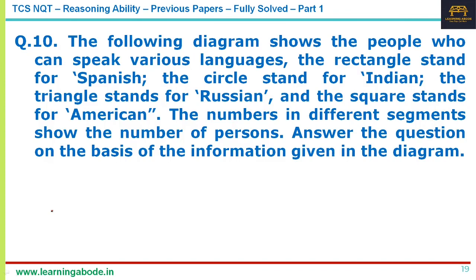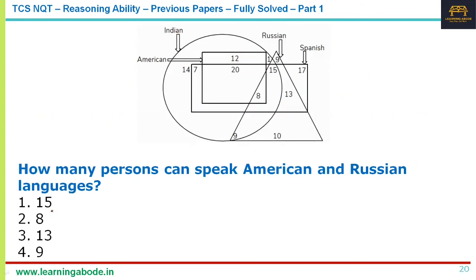Question 10 is a Venn diagram question. Russian speakers are represented by a triangle, Spanish by a rectangle, and American Indian by a square. The question asks how many people speak both American Indian and Russian — that is the intersection of the square and triangle, which gives the value 8. Answer option 2.